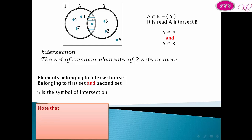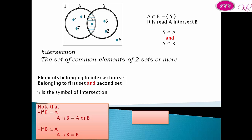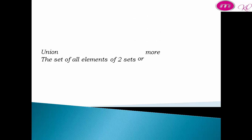Note that: if B equals A, then A intersect B equals A or B. If B is a subset of A, then A intersect B equals B. Also, A intersect B equals B intersect A (intersection is commutative).